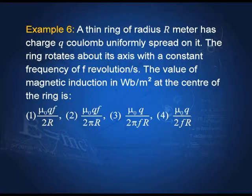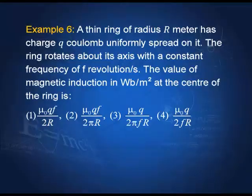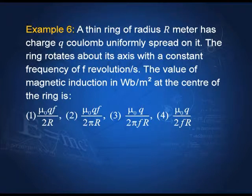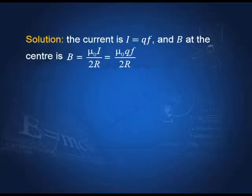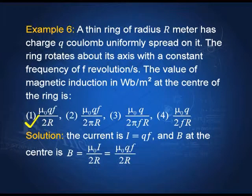A thin ring of radius r has charge q coulombs uniformly spread on it. The ring rotates about its axis with constant frequency f revolutions per second. The rotating charge is equivalent to a current i = qf, since the period t = 1/f. The magnetic field at the center of the ring is B = μ₀i/2r = μ₀qf/2r. All these examples are simple; you just need to recall the correct formulae.